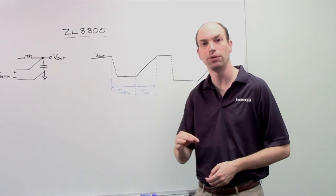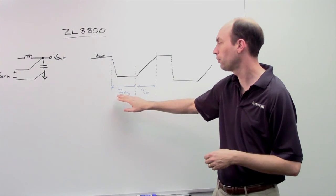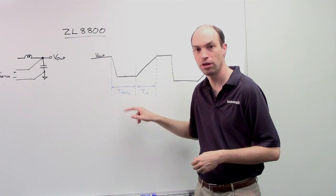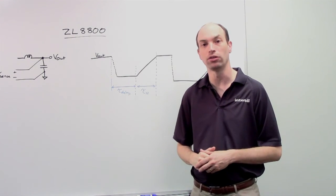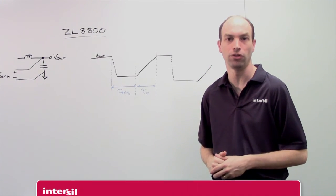Now every one of those parameters is individually adjustable per the two different output channels. So the number of times you want it to try and retry, the actual delay time, all of this can be individually set. And all of this information is within the datasheet in the PMBus command sections in the back.